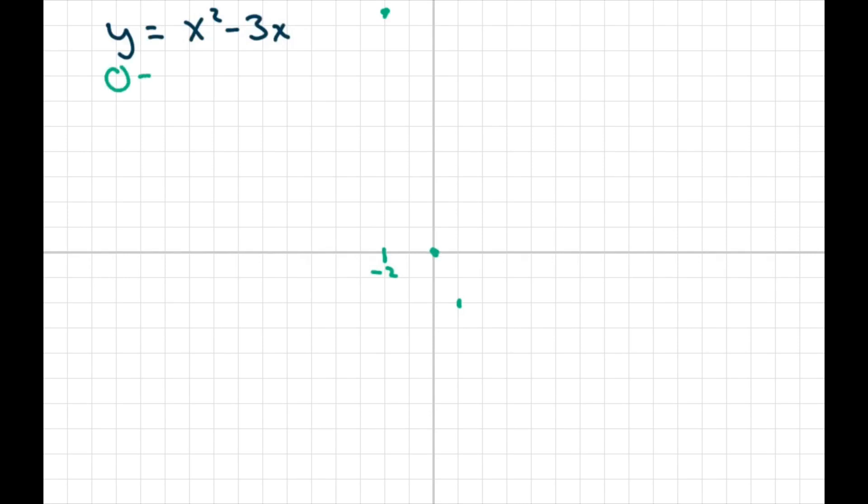And our y intercept and x intercept is 0, 0. Let's factor this. So you get x, x minus 3. So we have x intercept at 0 and at 3. So go over to the 3 here. And the midpoint between these two is right in here. So it probably goes down a little bit. So 2 point something. Let's kind of sketch a graph here.